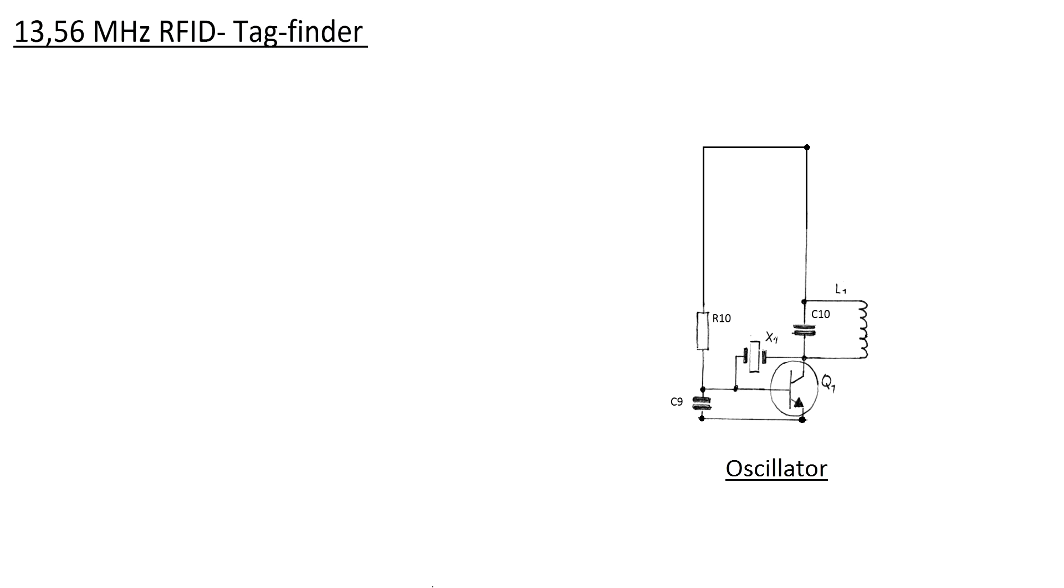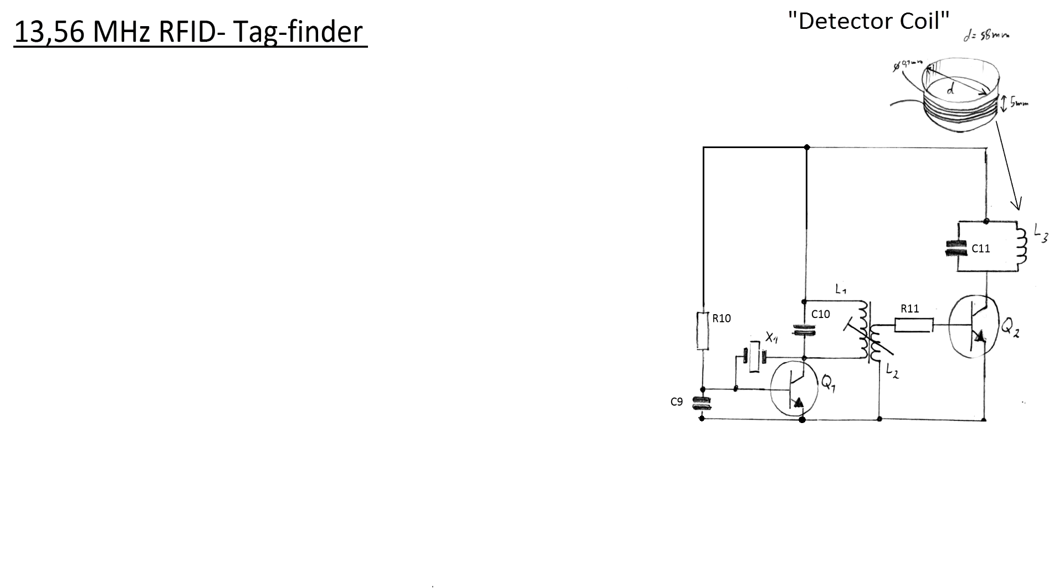This alternating voltage is then amplified by an RF amplifier stage that is inductively coupled to the oscillator. In the collector branch of the transistor Q2, you see a resonance circuit in which you find the big coil that is outside the casing of the detector. I call it the detector coil, which must be custom made.